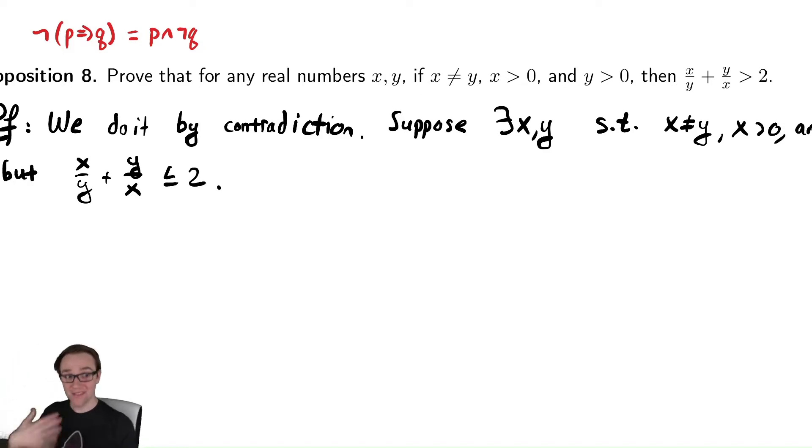And now I have something that I'm supposing is true. I have an inequality to work with that I can then do algebra on. The problem with the direct proof here was that there was no obvious getting your foot in the door moment. You didn't have an expression to work with. The same thing was true when we did a proof by contrapositive. So here, what we're going to do is we are going to try and work with that inequality using the facts that we know.